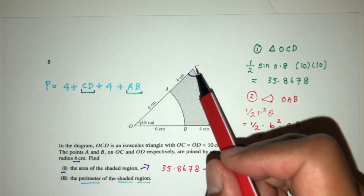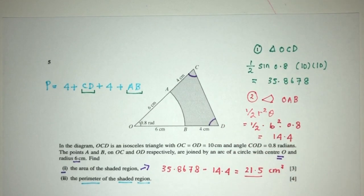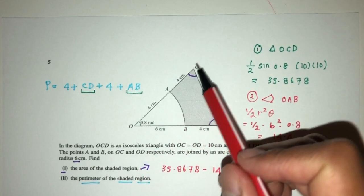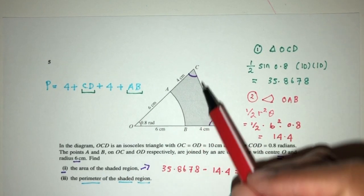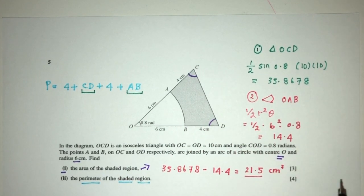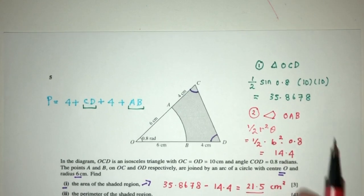So first thing first, let's find CD. CD is this one. Now we can see clearly that we have a triangle, right? We have these two sides, we have the angle in between, we're trying to find the third side, we can simply use the cosine rule.